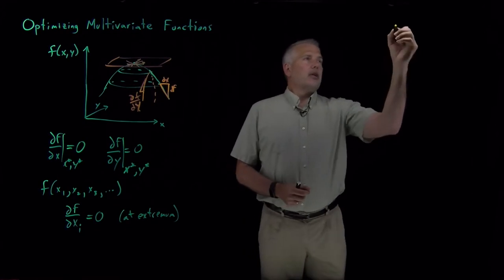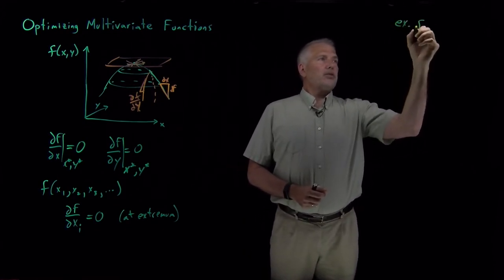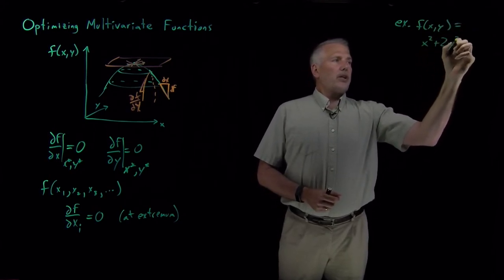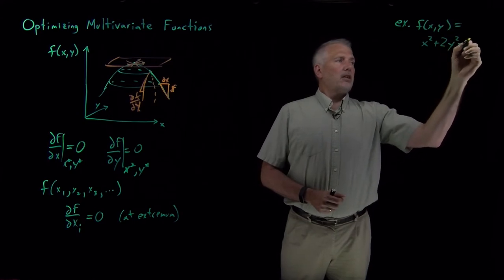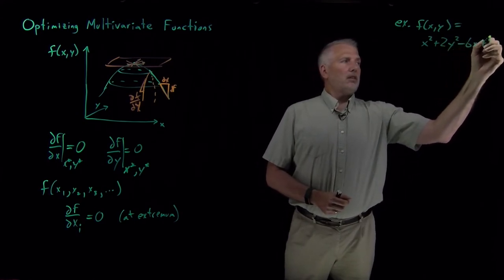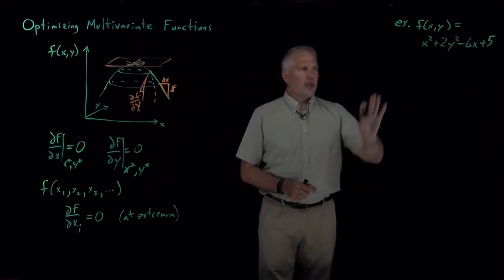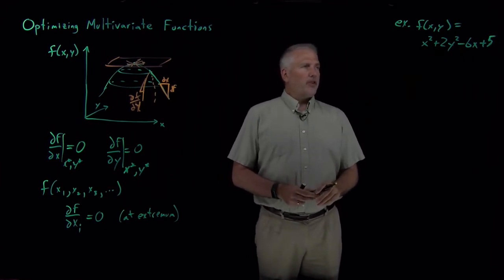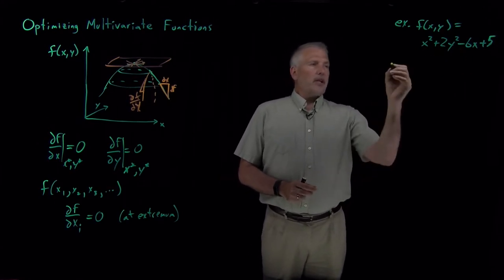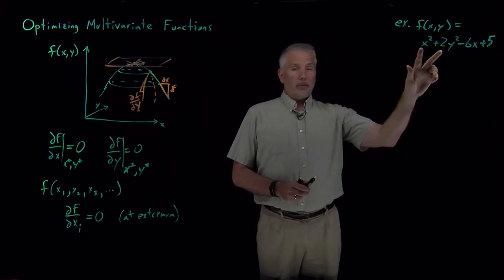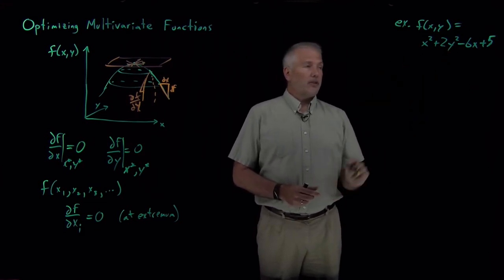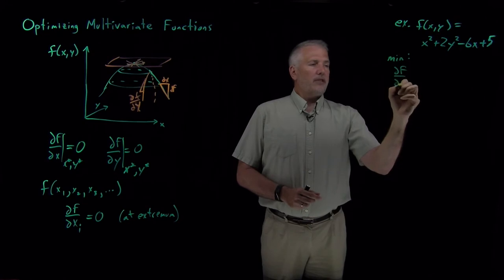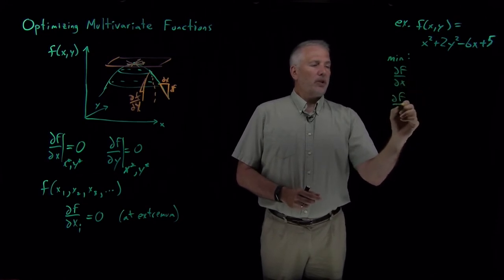For example, let's suppose our function is x² + 2y² - 6x + 5. So there's a function. It's not the same as this function, but it's a parabolic function that's going to be fairly easy to take derivatives of. And if I want to know where is the minimum - this function will have a minimum, it's a concave up parabolic function - the minimum of this function will be where df/dx and df/dy are both equal to zero.